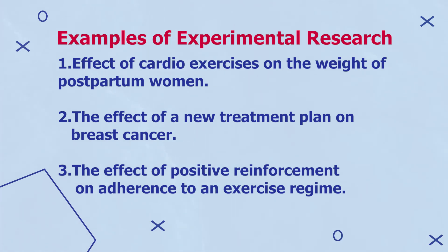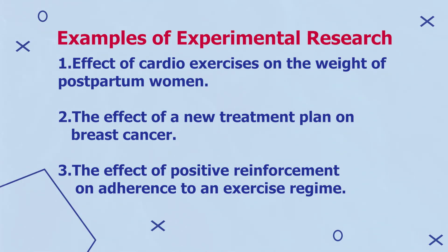Subjects are randomly assigned to experimental treatments rather than identified in natural settings. Examples of experimental research include the effect of cardio exercises on the weight of postpartum women, the effect of a new treatment plan on breast cancer, and the effect of positive reinforcement on adherence to an exercise regime.